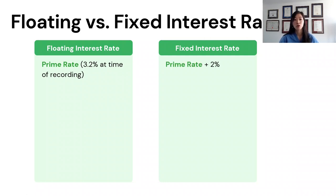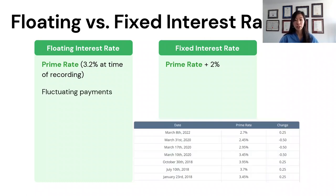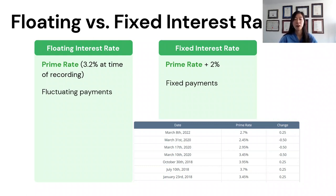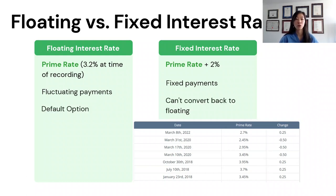For the fixed interest rate, it's prime rate plus 2%. With floating interest rates, it fluctuates — as you can see on the chart, it's changed over the past couple of years. Whereas for fixed, it's set at the current prime rate plus 2% at the time you lock in. The important thing with the fixed interest rate is that once you fix it, you can't revert back to the floating interest rate.